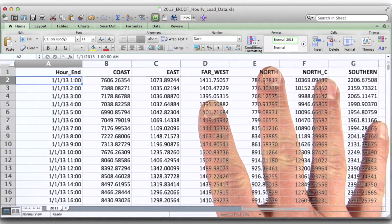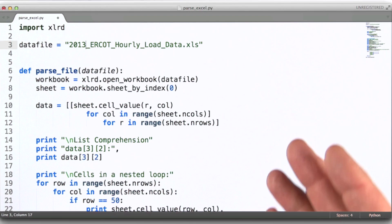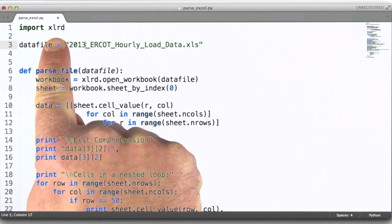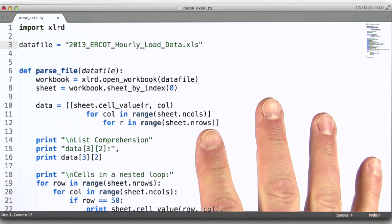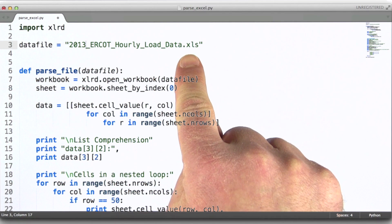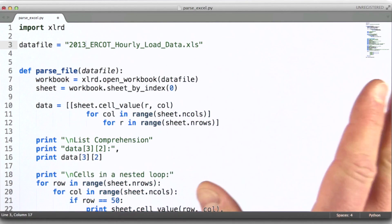What I'd like to introduce you to here is a Python module called XLRD. XLRD allows us to work with Excel files, whether it's the old XLS format, or the new XLSX format.